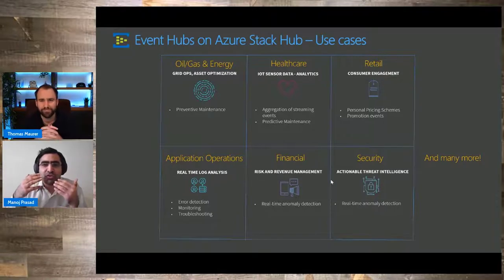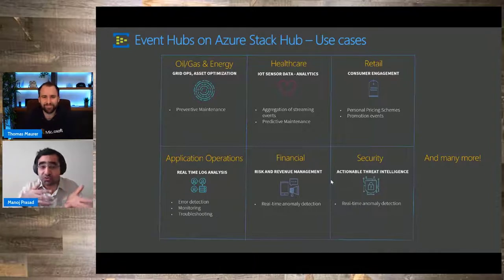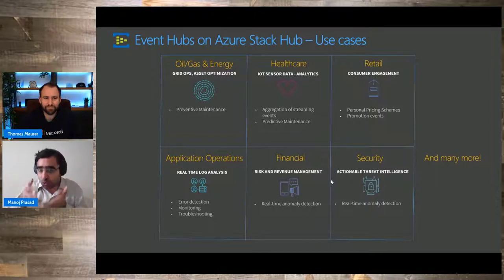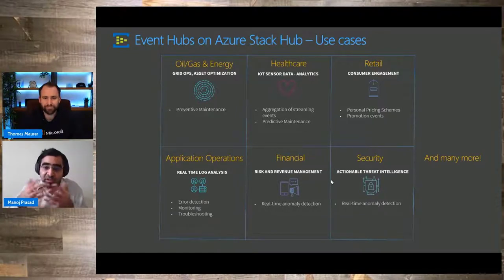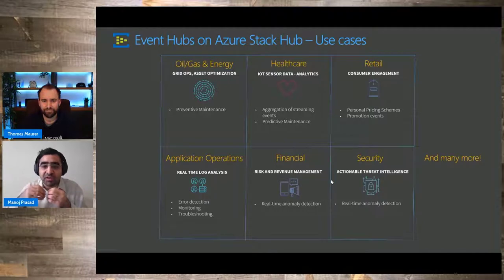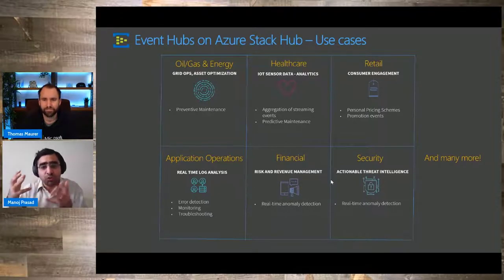Financial — think about data related to stocks. You could use Event Hubs to ingest that streaming data. Also, credit card transactions, for example — anomaly detection. If you want to find some anomalies in credit card transactions, you could ingest that data through Event Hubs and run analytics or anomaly detection to find any kind of fraudulent activity. For security — in your home, you have security devices streaming data, you can ingest them through Event Hub, run threat intelligence and analytics to identify any security holes. Using data to get feedback — you could always use Event Hubs to ingest that data.